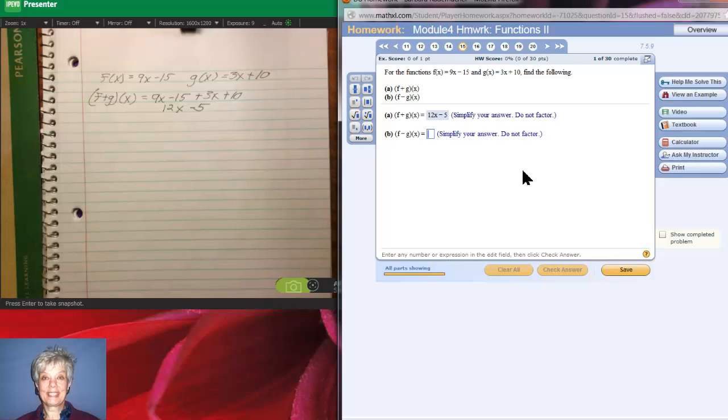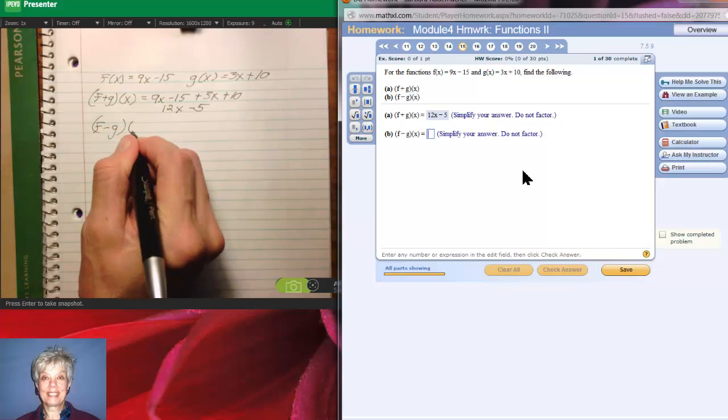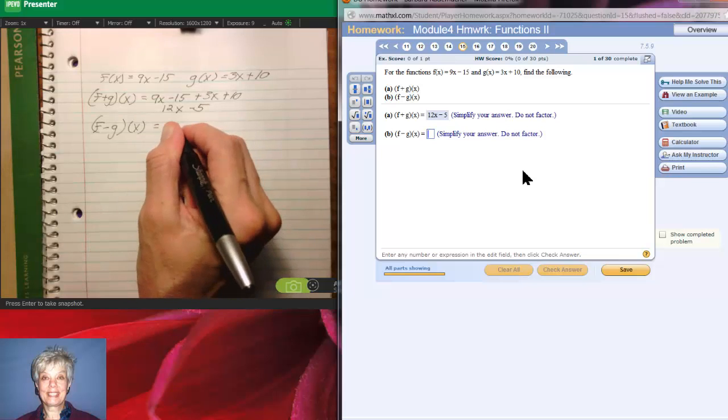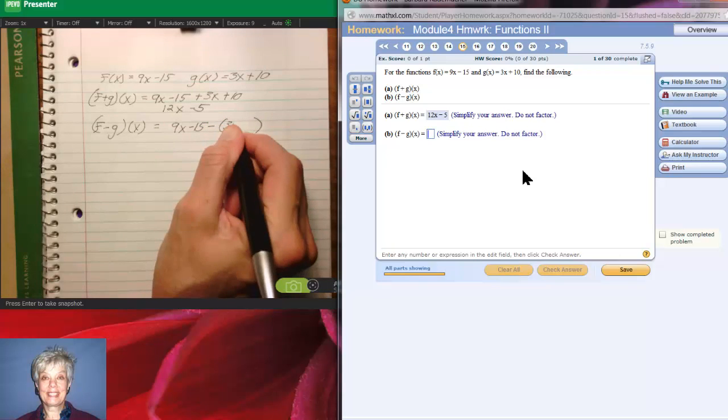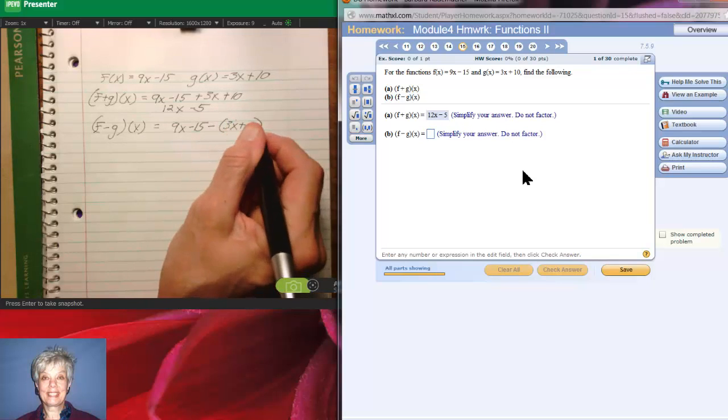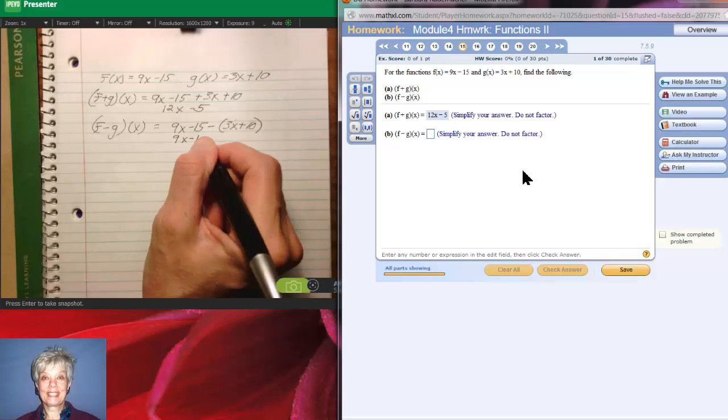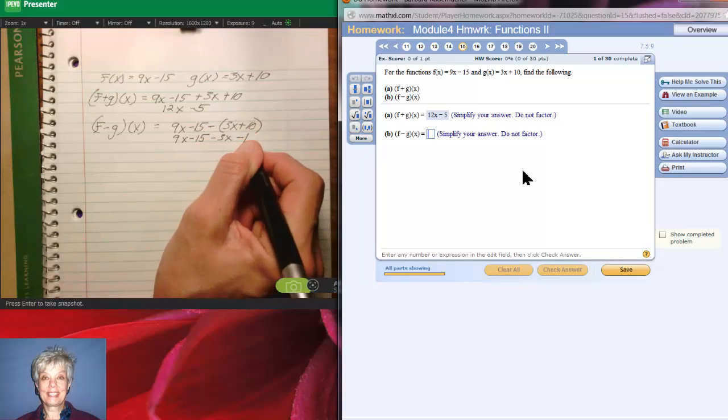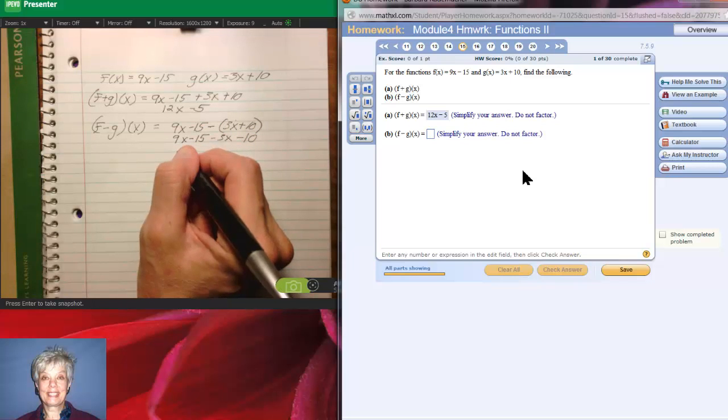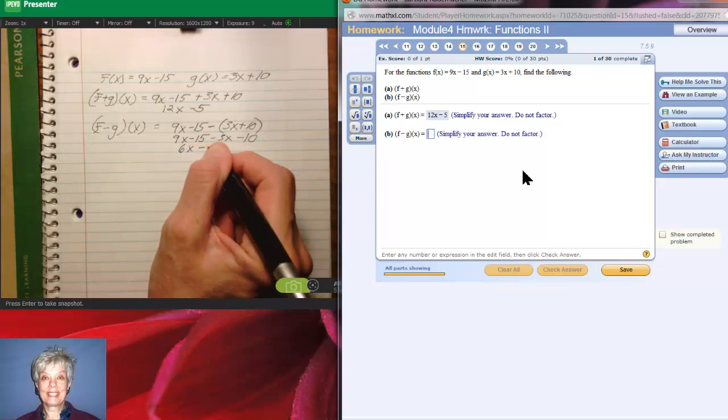Alright, now we're going to subtract. And if you remember from beginning algebra, subtraction is just a tad more dangerous. We'll say the first function, which is 9x minus 15. But when we subtract the second function, we have to put it in parentheses. 3x plus 10. Because we have more than one term here, we have two terms. And if I don't use parentheses, I'll make a sign error. I have to be sure to distribute the negative sign.